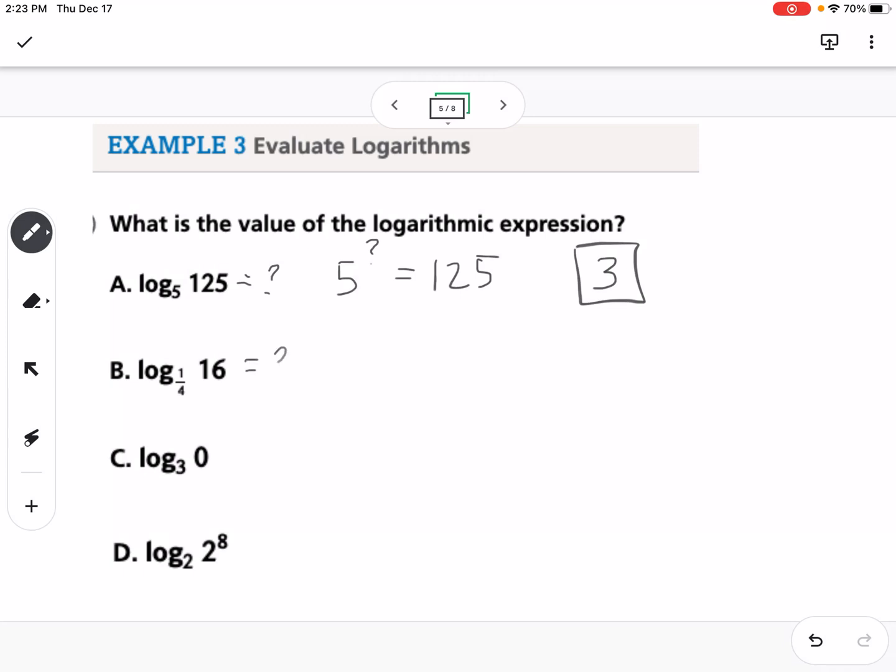Same thing here, I'm going to set it equal to a question mark and say 1 fourth to the what power equals 16. We know that that's going to need to be negative to flip it. So this would be negative 2 because 4 squared would be 16. So 1 fourth to the negative 2 power is equal to 16.